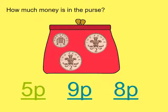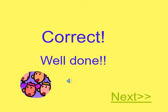How much money can you see in the purse? We've got a one pence coin, a two pence coin and another two pence coin. How much is that all together? That's correct, it's five pence.